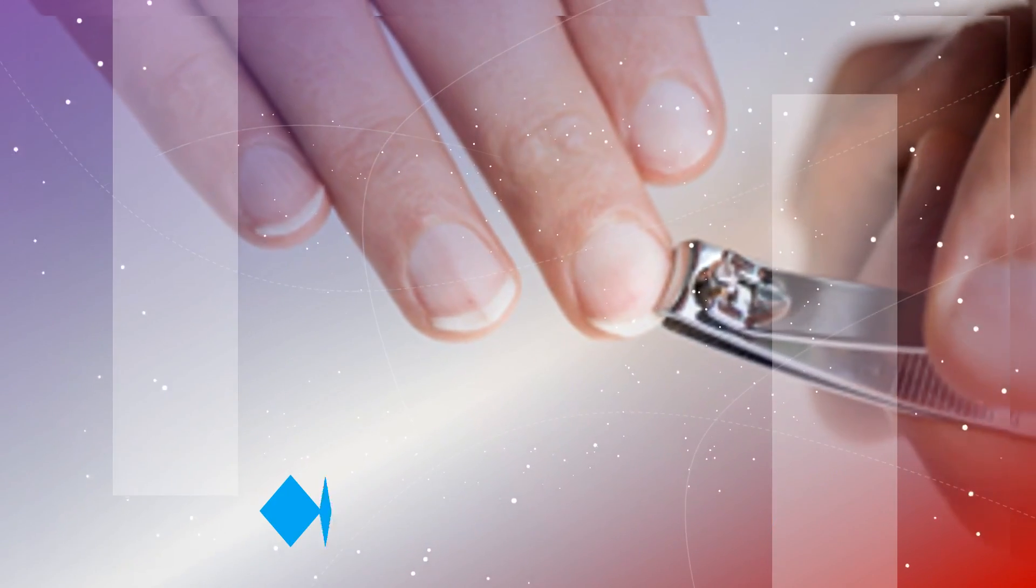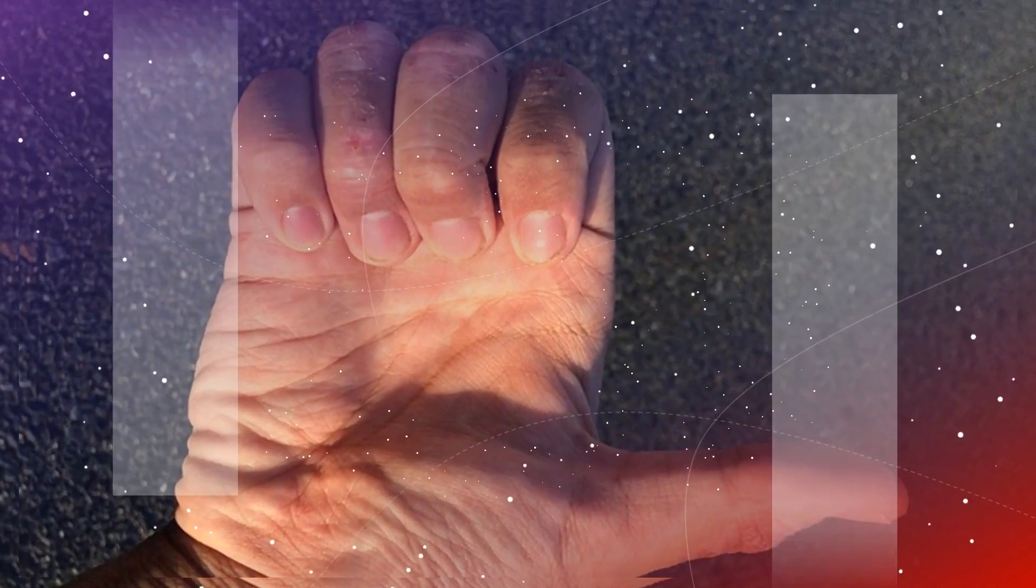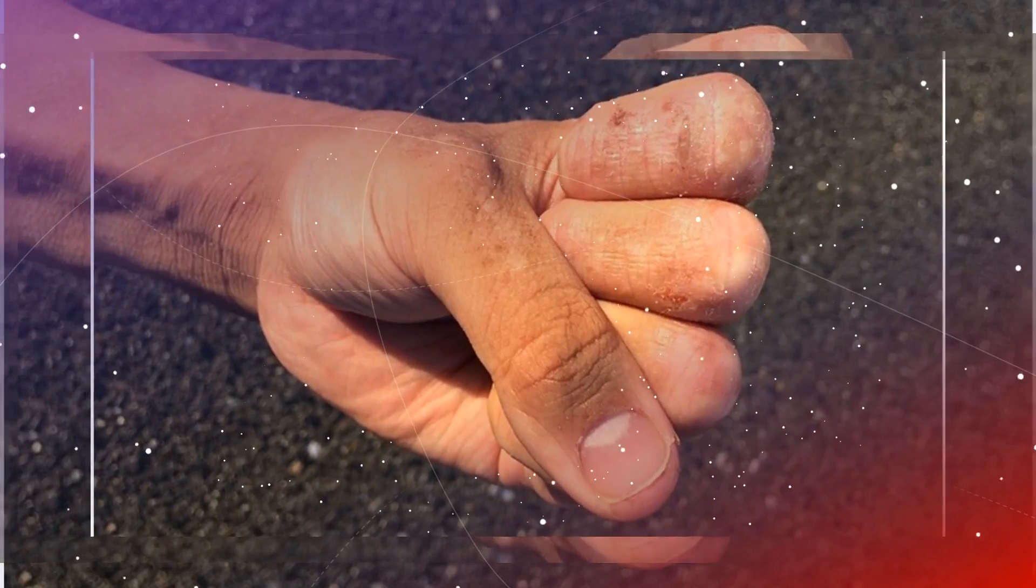10. White Nails with a Strip of Pink. If your nails are mostly white with a narrow pink strip at the top, known as Terry's nails, it could be a sign of liver disease, congestive heart failure, kidney failure, or diabetes. Sometimes Terry's nails may also be due to aging.